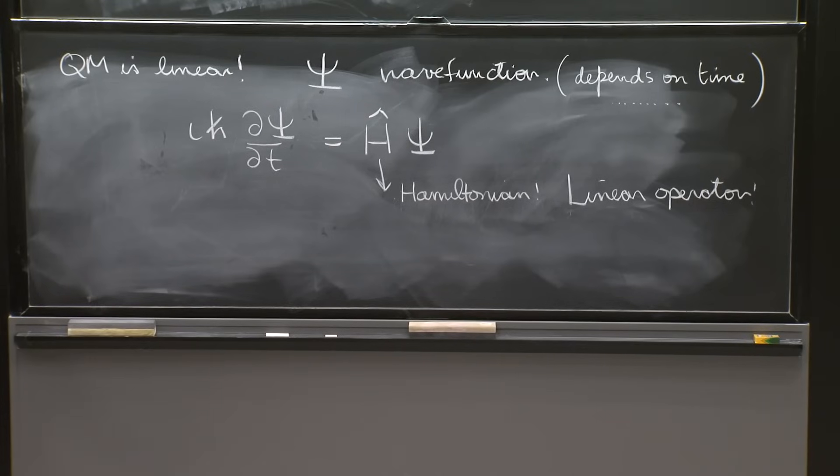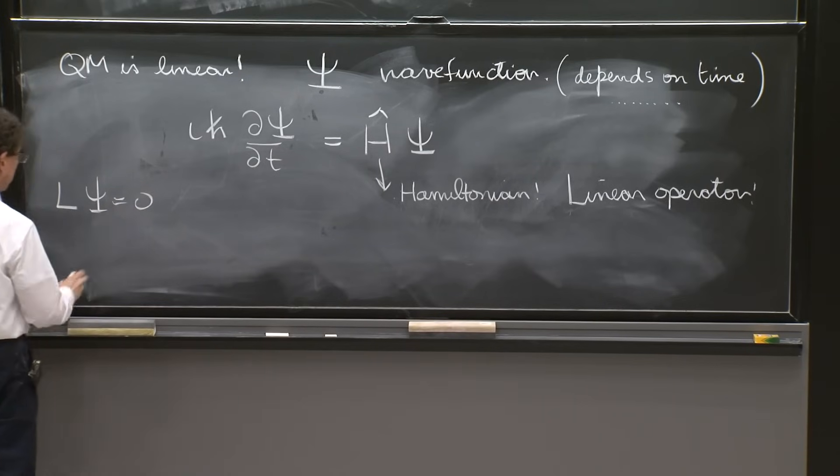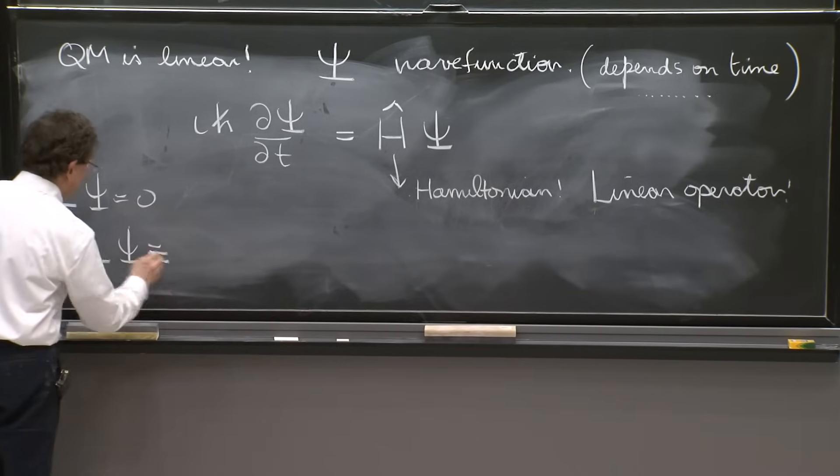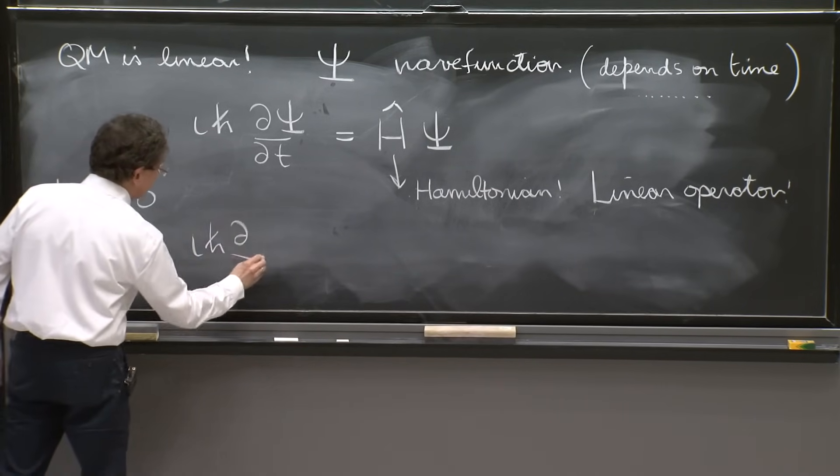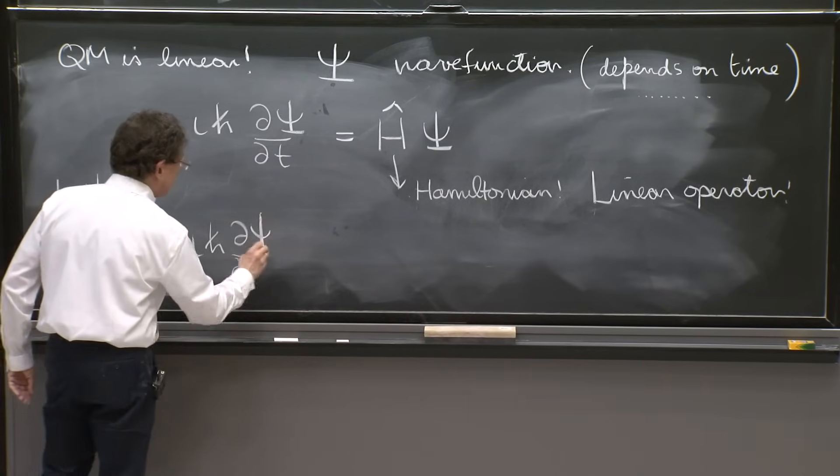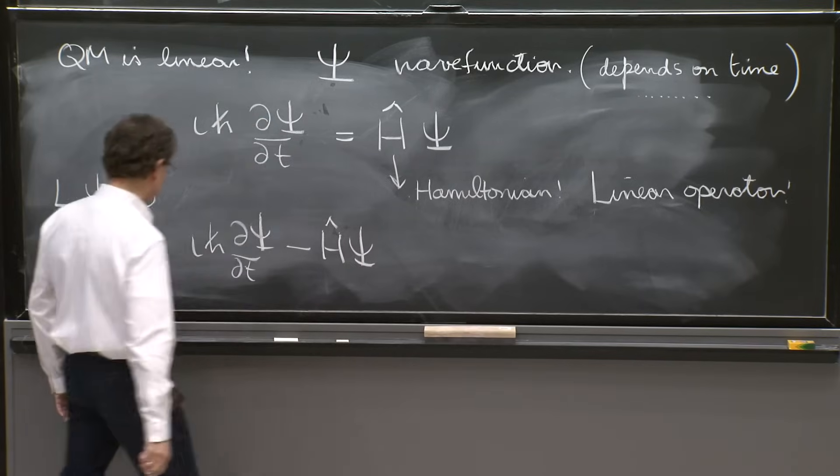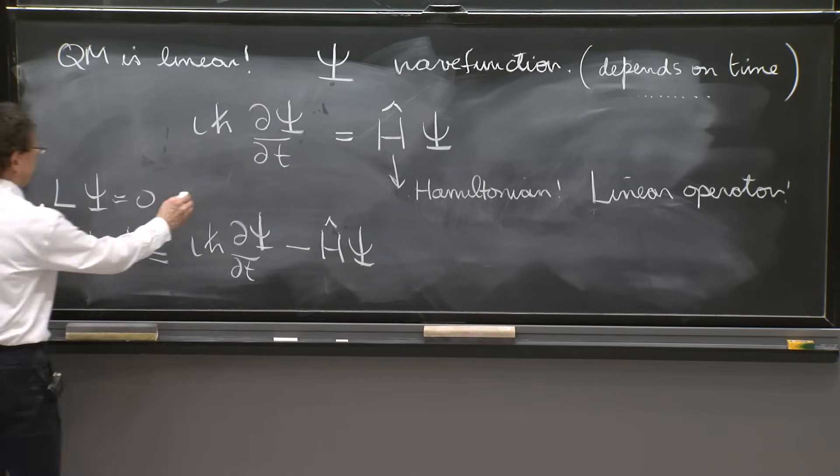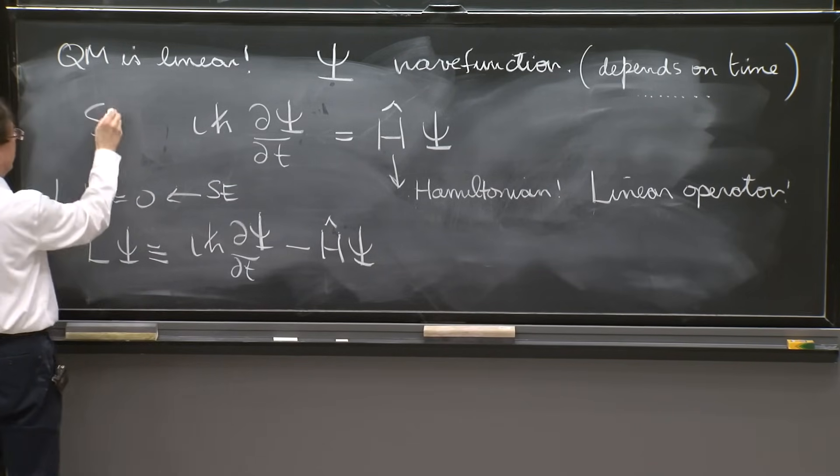So if you wish to write the Schrodinger equation as L psi equals 0, then L psi would be defined as i h-bar d dt of psi minus H hat psi. Then this is the Schrodinger equation. So this equation here, Schrodinger equation.